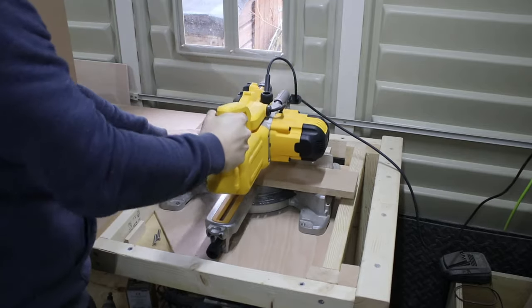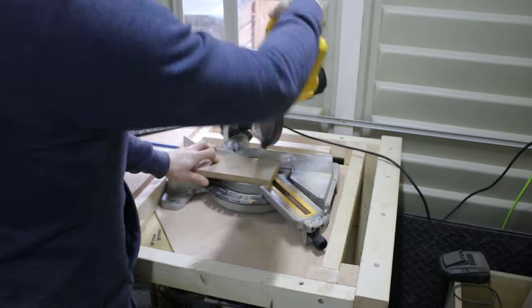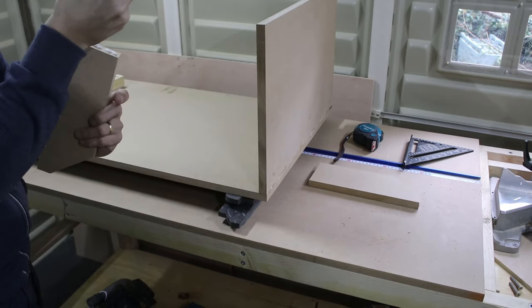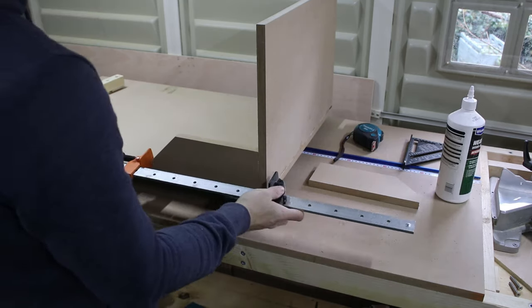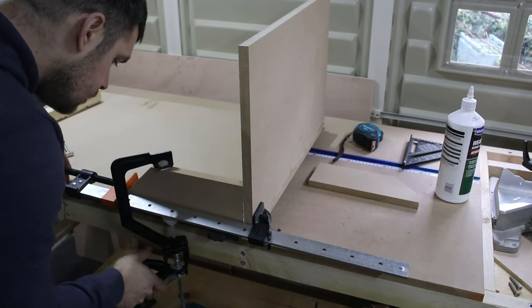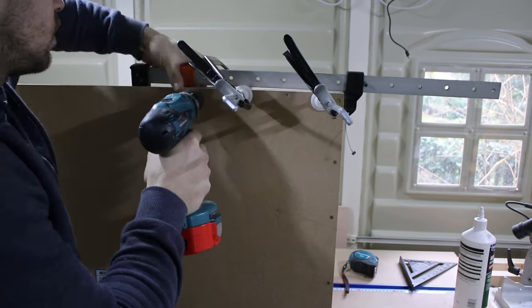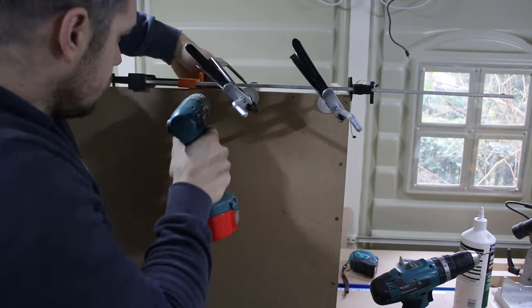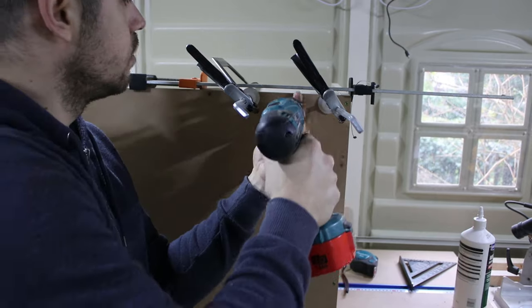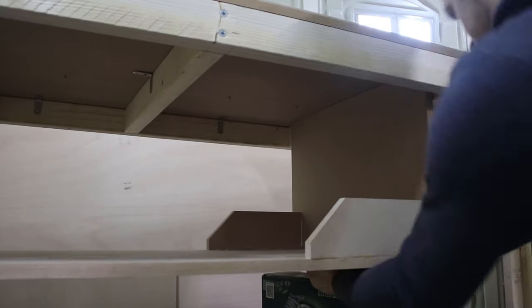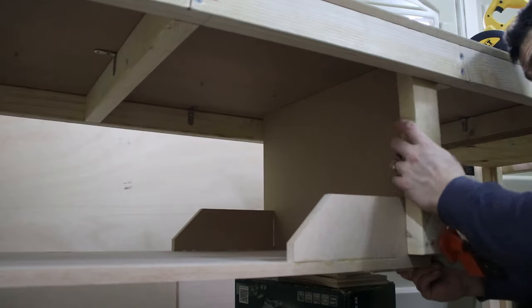After that I made some extra support for keeping it square and sturdy. With that done, I just had to place the shelf under the workbench and secure it on both sides with screws.